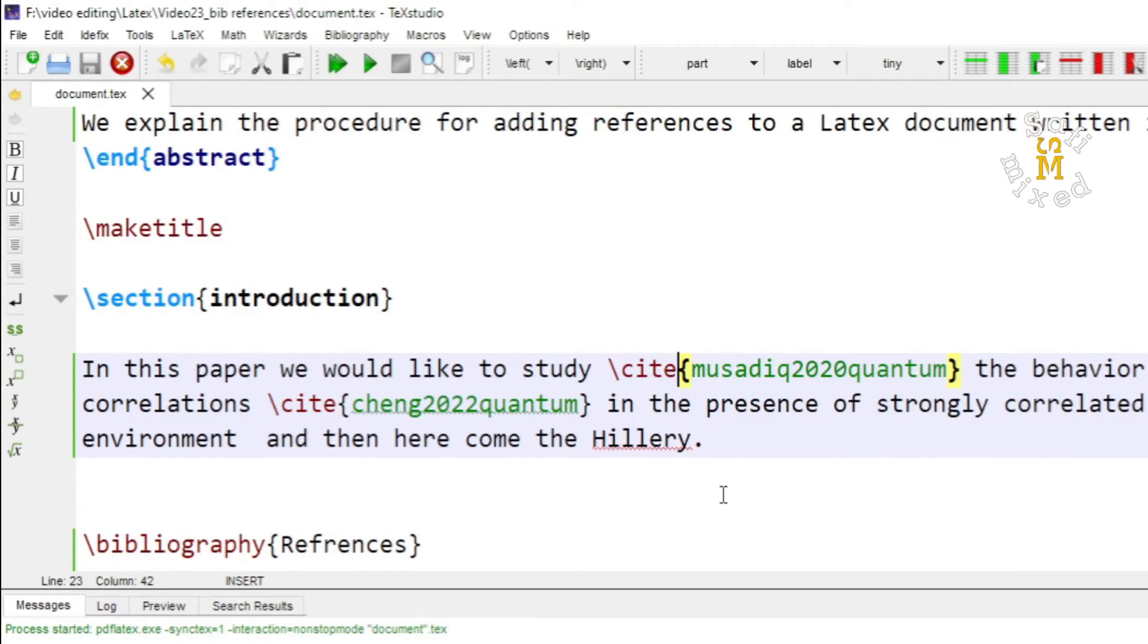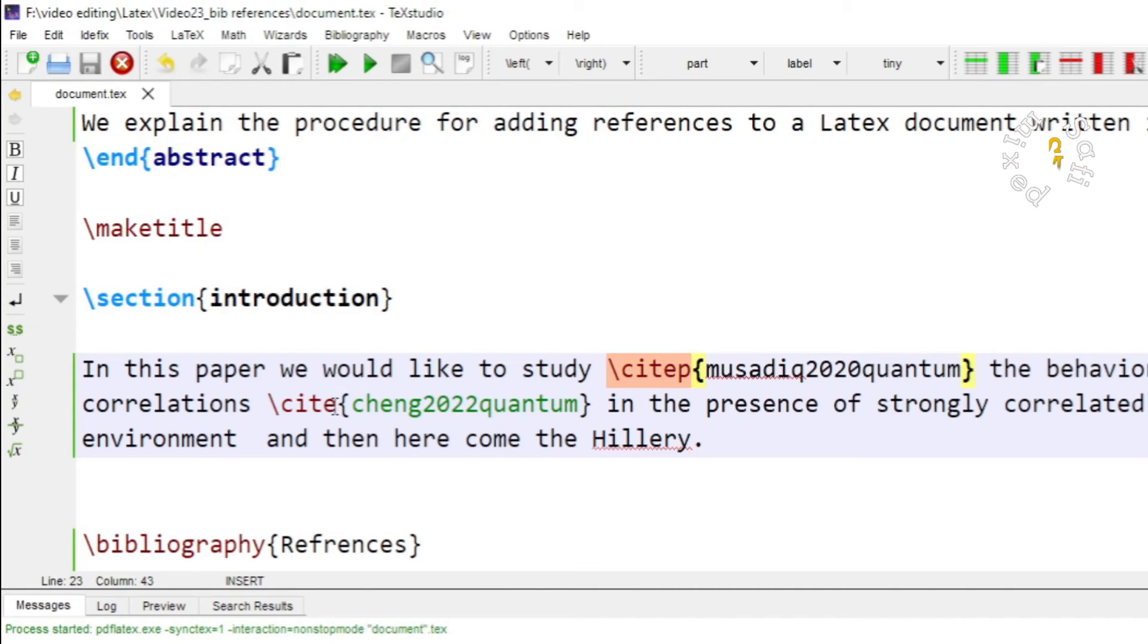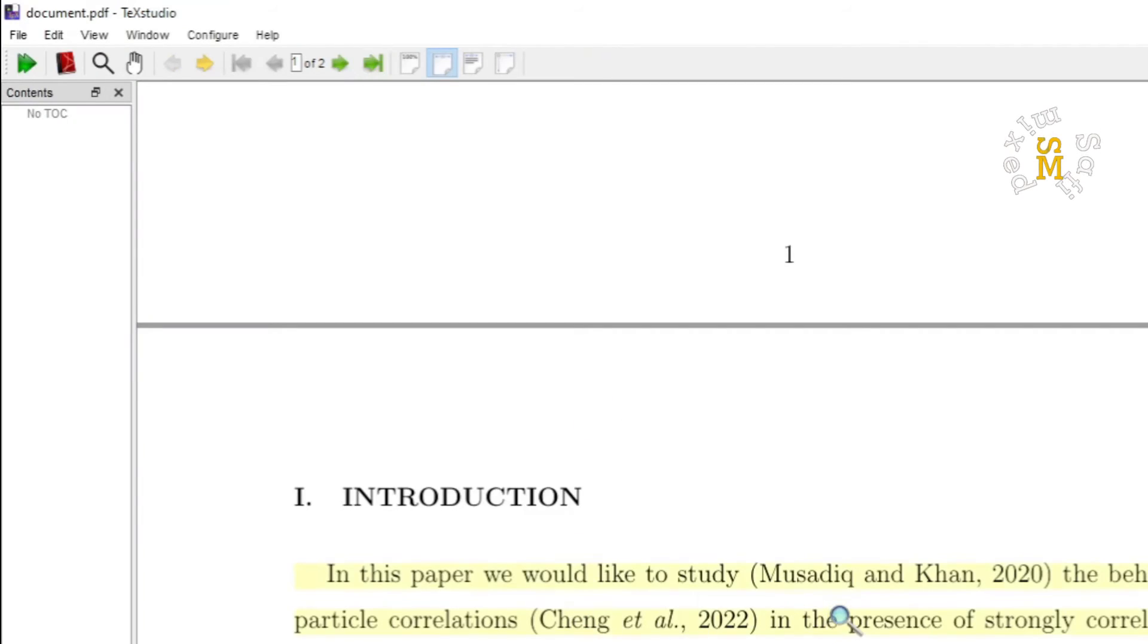By changing the command cite to citep if we build the document now the author name would be put inside the brackets you see. Similarly I can do with the second one if I convert this cite to citep it will be enclosed inside the brackets.